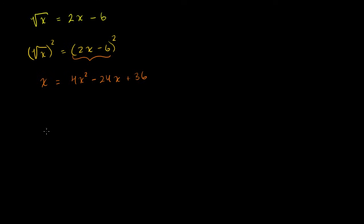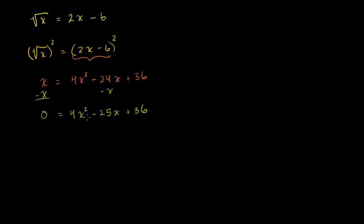If we subtract x from both sides of this equation, the left-hand side becomes 0 and the right-hand side becomes 4x squared minus 25x plus 36. So this radical equation has simplified to just a standard quadratic equation.